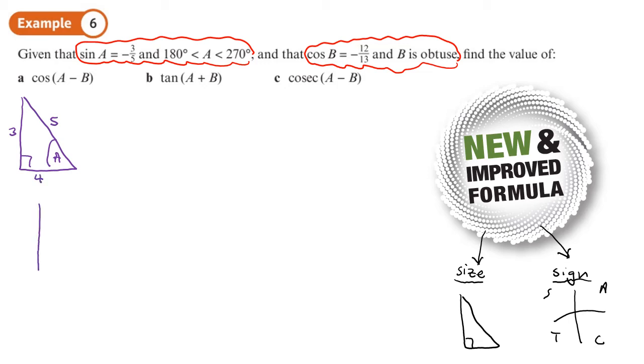I'm going to call that angle A. The lengths of the sides are 3 for the opposite, 5 for the hypotenuse, so this has got to be 4. Using a cast diagram, it tells us the angle is between 180 and 270. That tells me that sine is going to be negative, cos is going to be negative, and tan is going to be positive. Sine A is negative 3/5, cos A is negative 4/5, and tan A is positive 3/4.